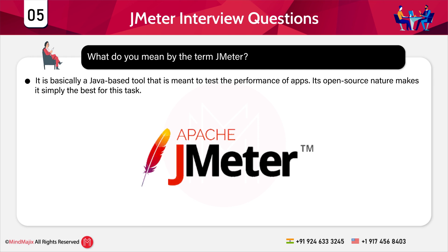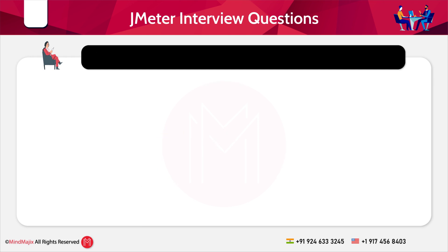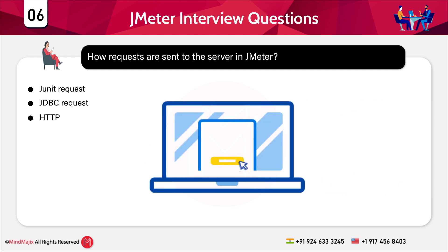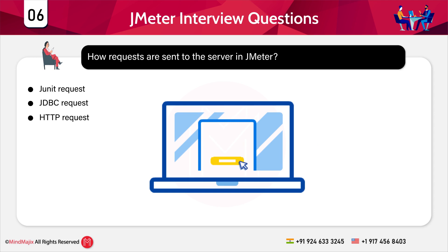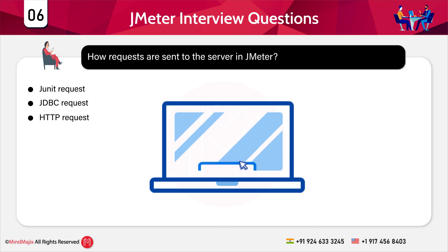The next question is: how are requests sent to the server in JMeter? This is done with the help of samplers. There are several samplers present in JMeter, and a few of the most commonly used ones are: JUnit request, JDBC request, and HTTP request.